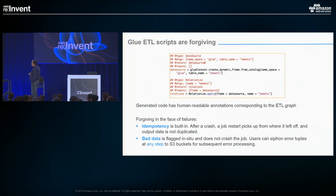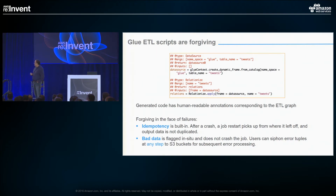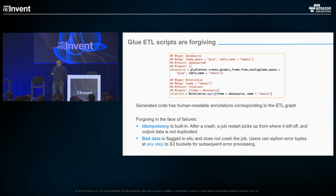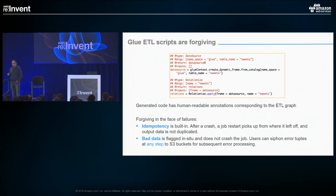We have the basic notion of frames in Spark, slightly enhanced to support dynamic frames, because the tuples actually change as you go from step to step in the transform. We deal with idempotency — these are the sorts of things that people don't code in when they're coding the happy path. Idempotency means a job restart is going to pick up from where it left off rather than duplicate your data in the target system. We'll tag bad data so we flag it and don't crash the code, and you can choose to siphon the error tuples off at any step into an S3 bucket and deal with it the next day.